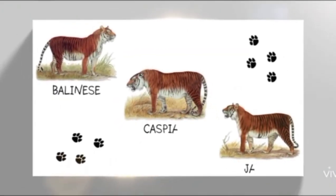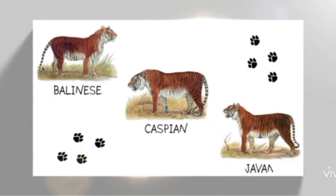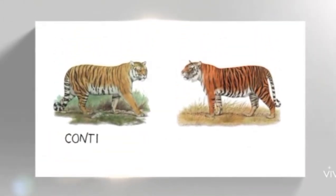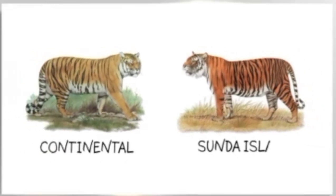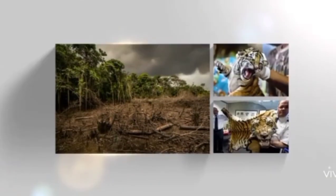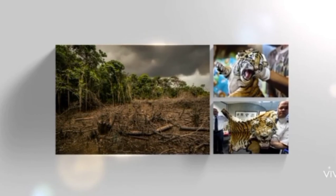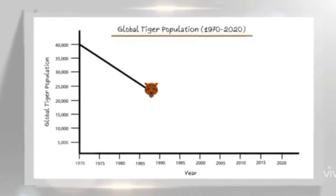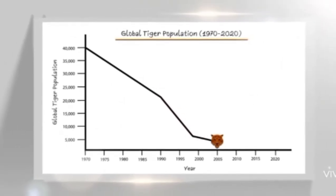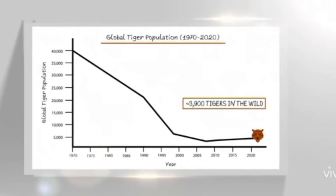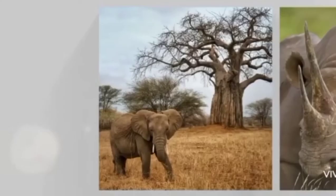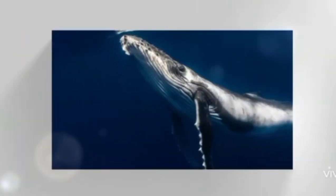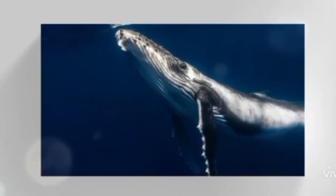For example, in the last century, Balinese, Caspian, and Javan tigers have all gone extinct, and only two species remain: the continental and Sunda island tiger — and sadly both are endangered. The reasons are poaching, illegal trade, habitat loss, and other human conflict issues, which have caused tiger populations to continue declining year after year. There are only about 3,900 tigers remaining in the world today.